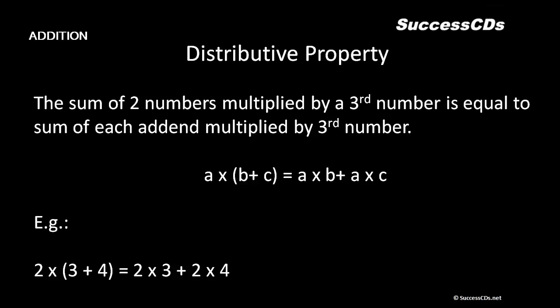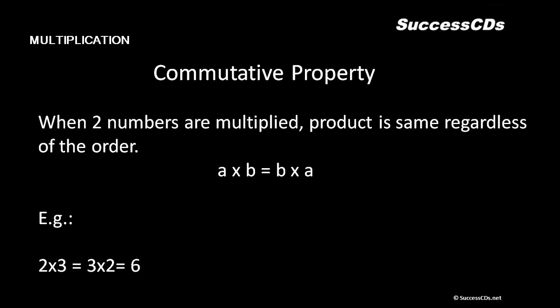For example, two into (three plus four): three plus four is seven, and seven into two is fourteen. On the right-hand side, two into three plus two into four — two into three is six, two into four is eight, and six plus eight equals fourteen. Whatever way I write it, I get fourteen. This is called the distributive property.